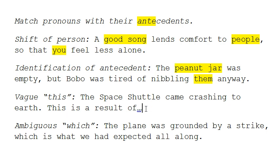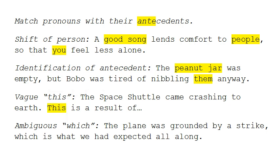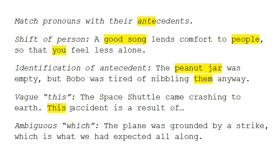This is more of a pet peeve of mine — it's the pronoun 'this.' Often people will start off a sentence saying 'this is the result of' or 'this means that,' etc. But what is 'this' referring to in the previous sentence? 'The space shuttle came crashing to earth. This is a result of' — what? An accident? The laws of gravity? The sentence needs to be clarified with a new noun referring to the concept presented in the previous sentence.